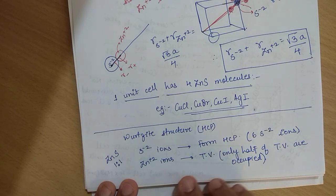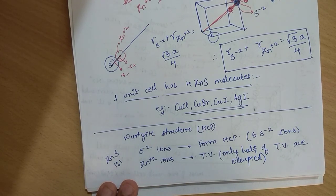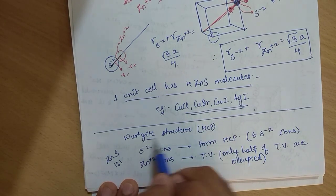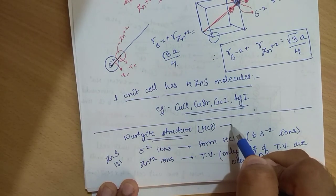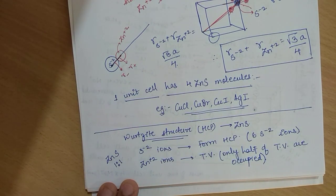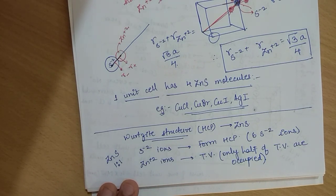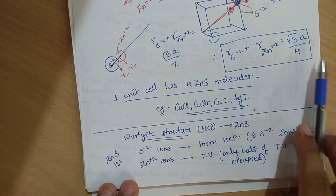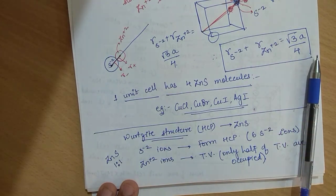I hope you have understood the rock salt structure and the zinc blende structure. ZnS has two structures: zinc blende (FCC-based) and wurtzite (HCP-based). We will end this lecture here. In the next lecture we will look at fluoride and anti-fluoride structures.